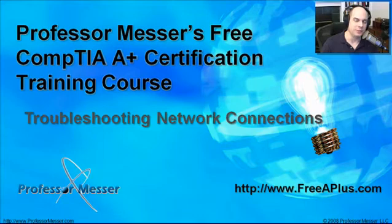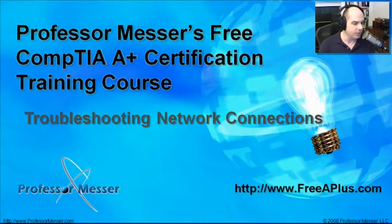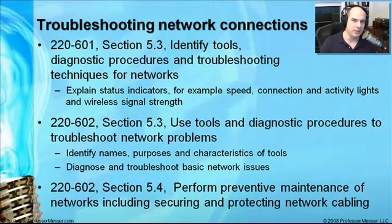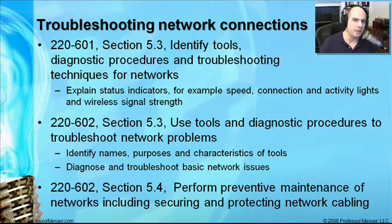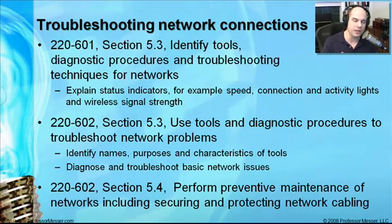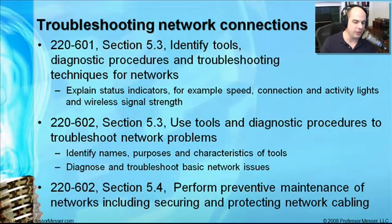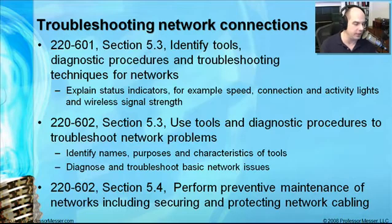Welcome to this module of Professor Messer's Free CompTIA A-Plus Certification Training Course. This module is on troubleshooting network connections. I'm James Messer, and I'll be your host. We're going to talk about the requirements from CompTIA 220-601, Section 5.3, where we need to explain status indicators, speed, connection, activity lights, and wireless signal strength. From the 220-602 exam, we need to understand how to use tools and diagnostic procedures, including command-line troubleshooting.